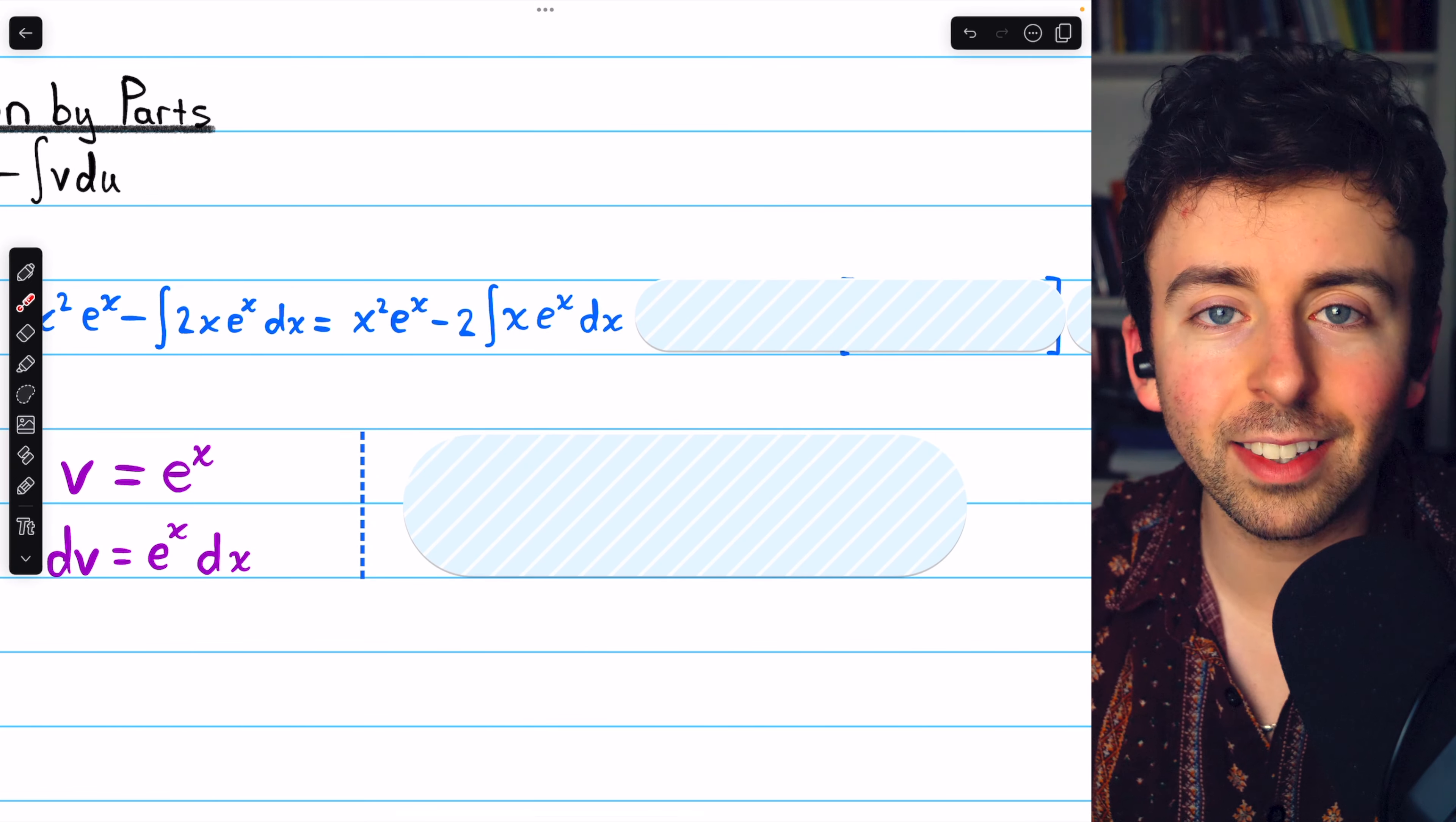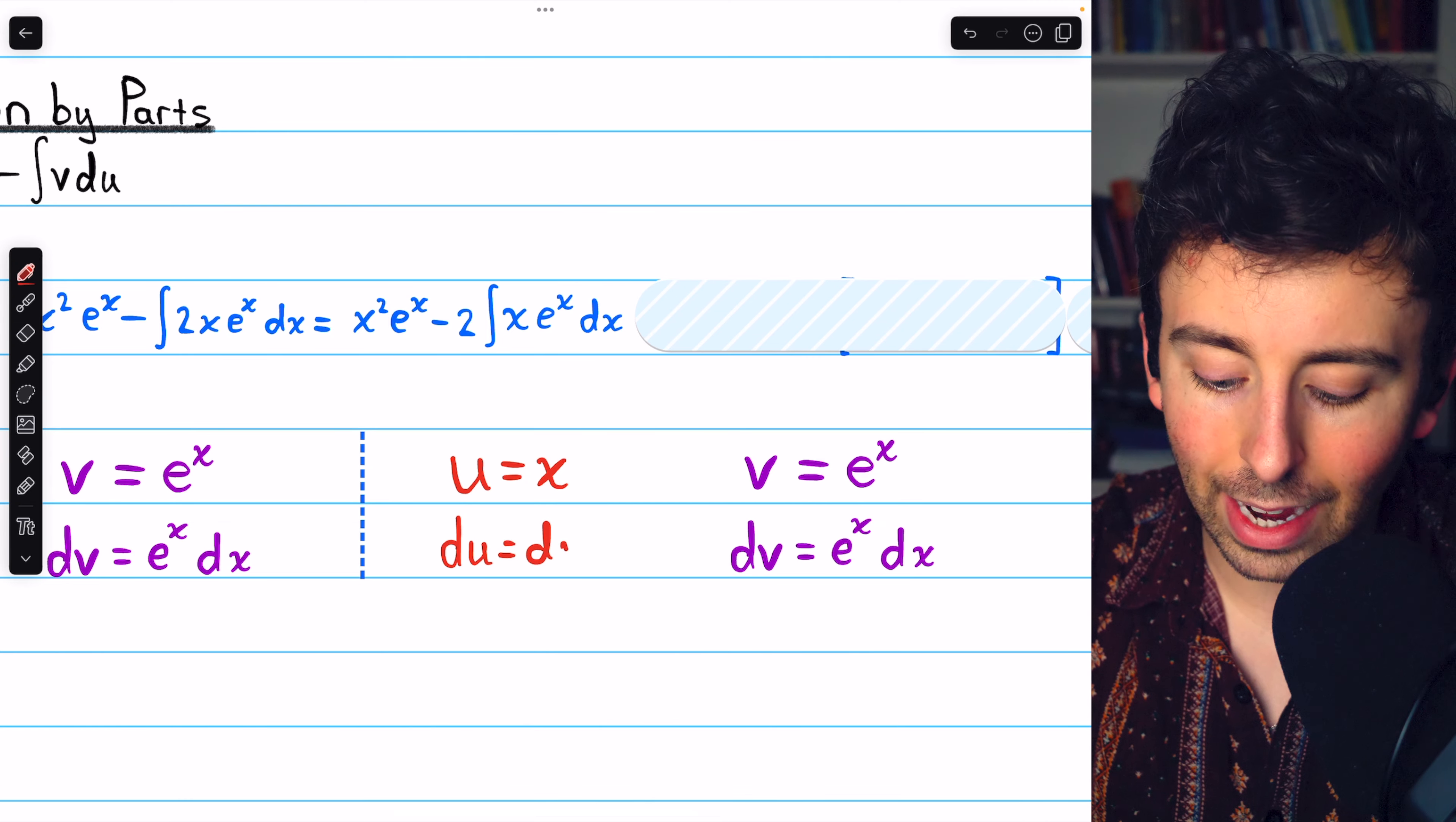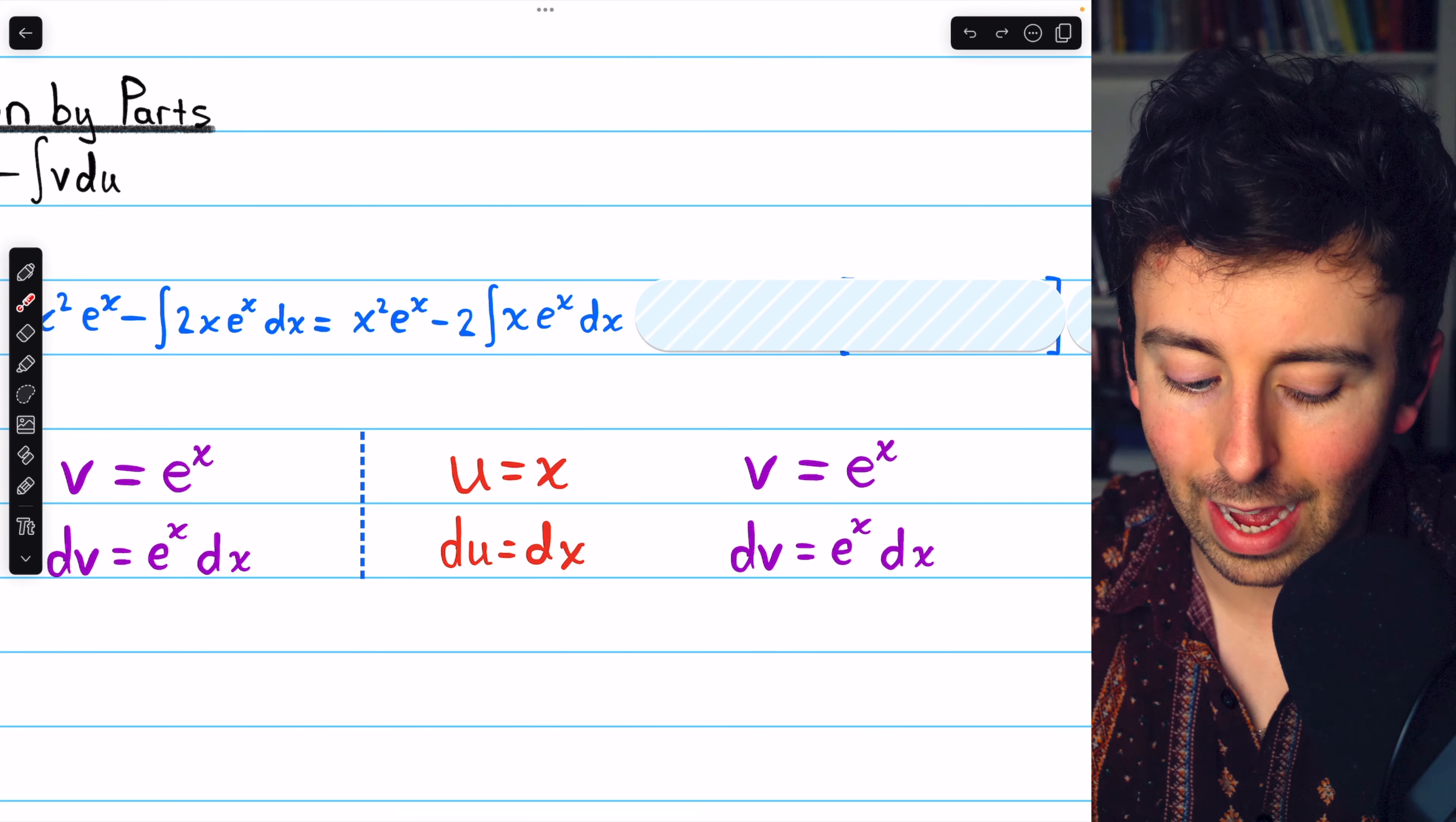So we'll let u equal x and dv equal e to the x dx. Then letting u equal x, we have that du equals dx. And letting dv equal e to the x dx, of course, we have that v equals e to the x.